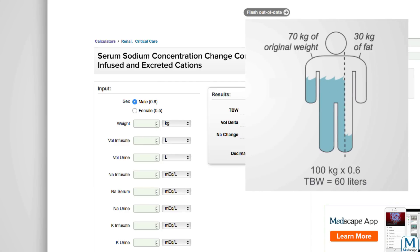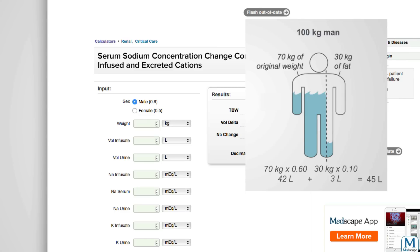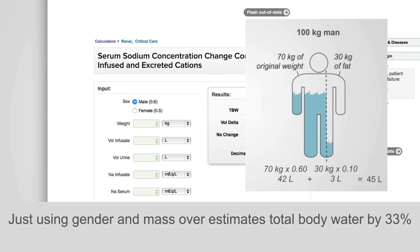If you were to use our patient who had just gained all that weight, 100 kilograms times 0.6 because he's male results in 60 liters rather than the correct calculation of 45 liters. Just using gender and mass can overestimate total body water by 33% in this example.